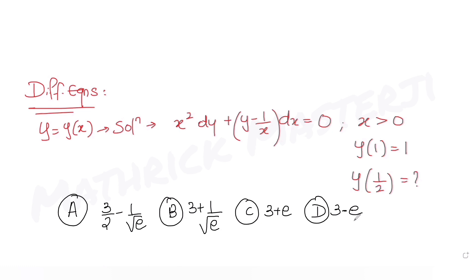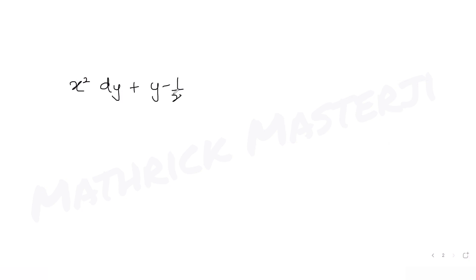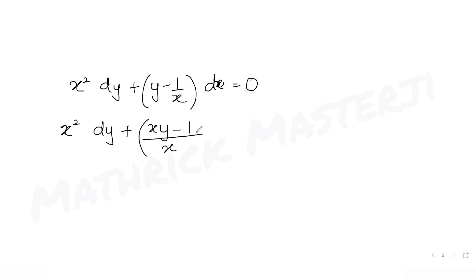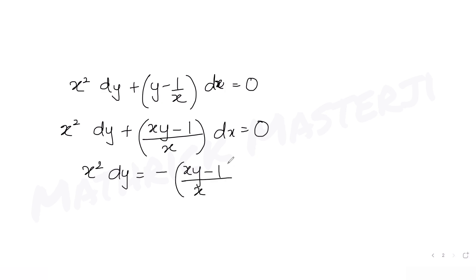Let's solve this. Starting from the differential equation x² dy + (y - 1/x) dx = 0, I simplify the fraction to get x² dy + (xy - 1)/x · dx = 0. Moving the second term to the right: x² dy = -(xy - 1)/x · dx, which gives (1 - xy)/x · dx.